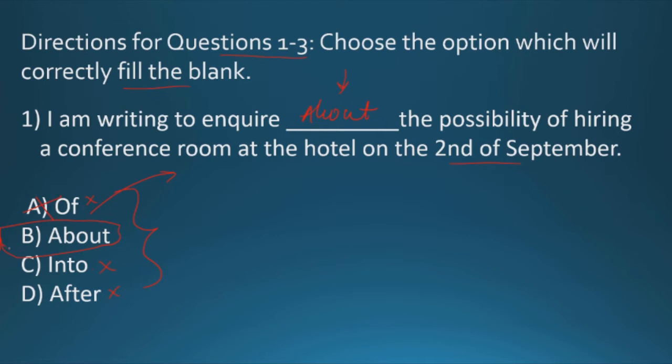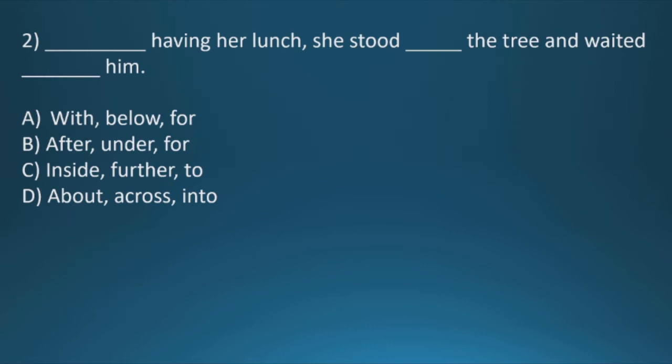I am writing to inquire into the possibility? Definitely a wrong option. I am writing to inquire after the possibility? No, this is also wrong. So our option B, that is about, is the correct answer. Question two: dash having her lunch, she stood dash the tree and waited dash him. Now here, first of all check the first blank if it is making sense or not, and then go for second and third blanks. With having her lunch? No, no, it does not make any sense, so we'll not check even for both the remaining options. After having her lunch, she stood under the tree and waited for him. Yes, this is correct.